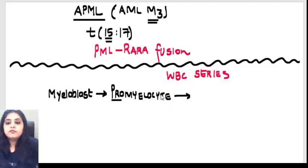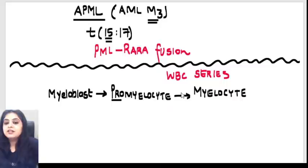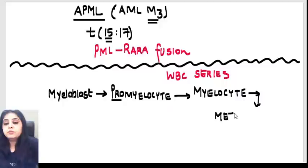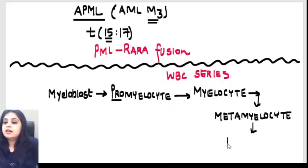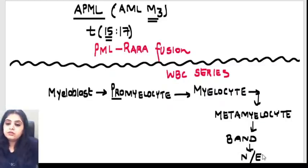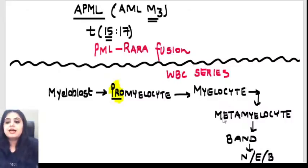After myelocyte, add the word 'meta' — so you have metamyelocyte. After metamyelocyte comes the band form, and after the band form comes the mature neutrophil, eosinophil, or basophil. Repeating: myeloblast → promyelocyte (remove 'pro') → myelocyte (add 'meta') → metamyelocyte → band → mature cells.